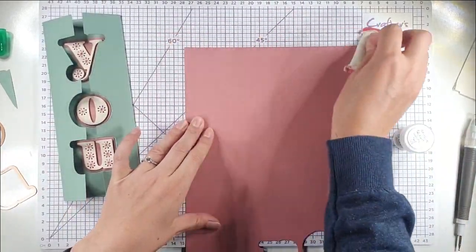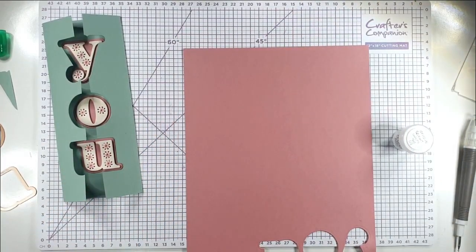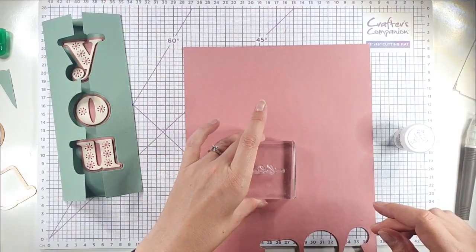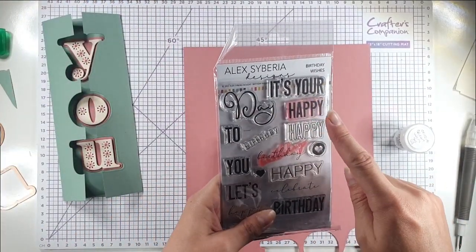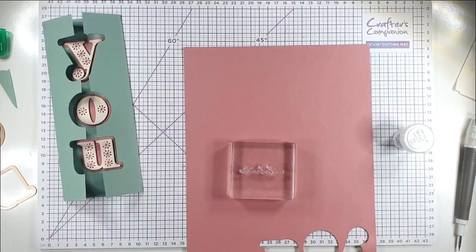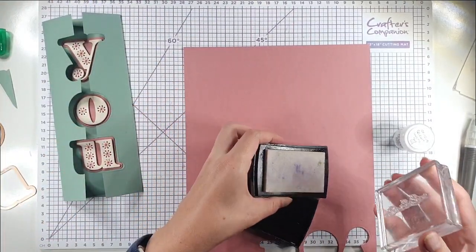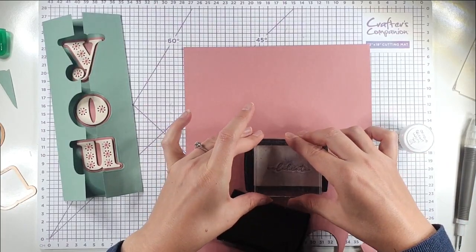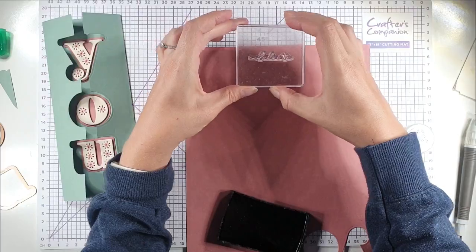So then I want to make a belly band for my card. I've got some of this Velvet Rose cardstock and I'm just going to take the Celebrate stamp that's from this Alex Syberia Designs Birthday Wishes stamp set. I'm sure you'll have seen me use that loads if you follow my videos, because it's one that I go to time and time again. I'm just going to stamp that in the center.